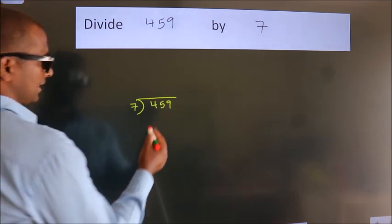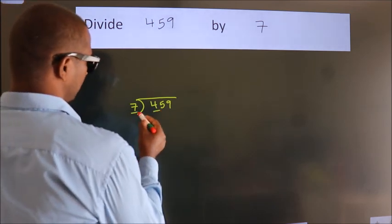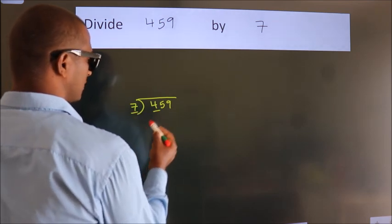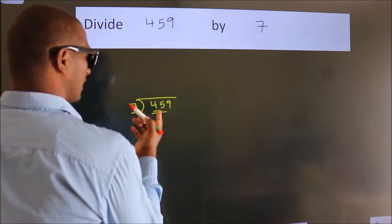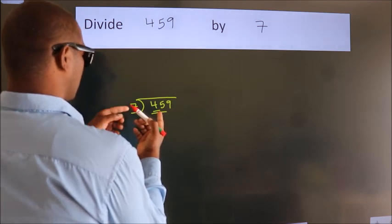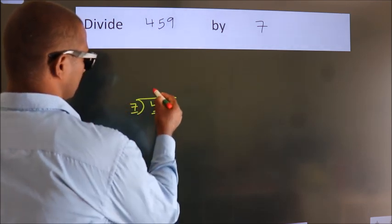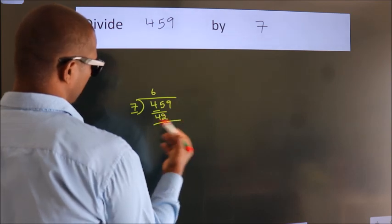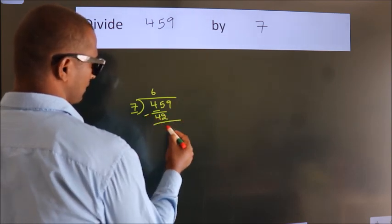Next, here we have 4, here 7. 4 is smaller than 7, so we should take 2 numbers: 45. A number close to 45 in the 7 table is 7 times 6, which is 42. Now we subtract and get 3.